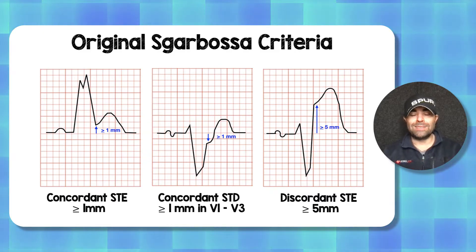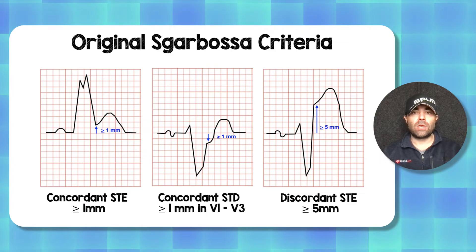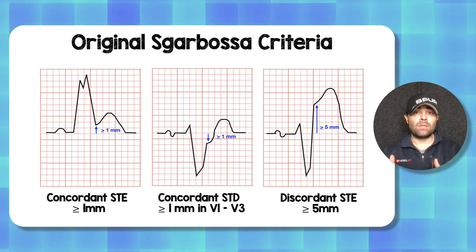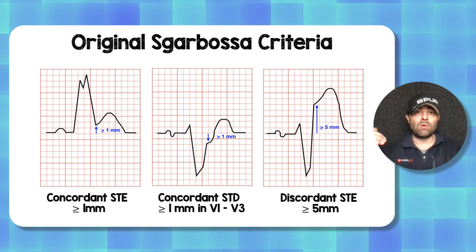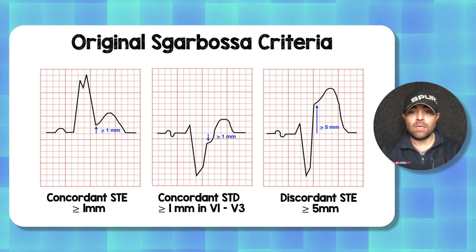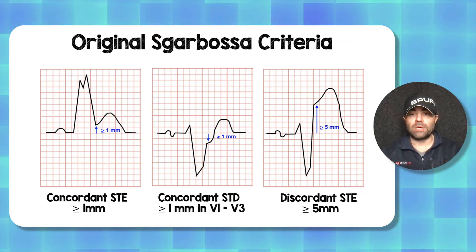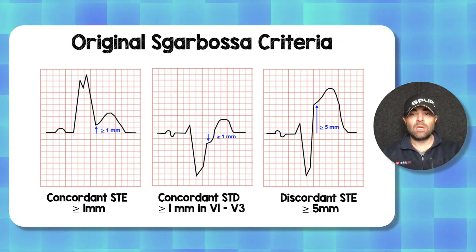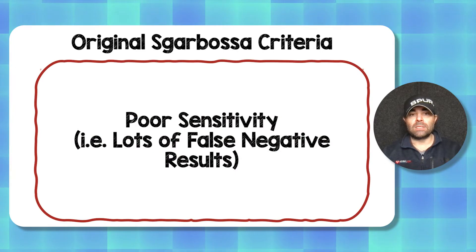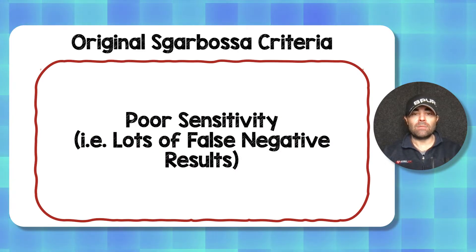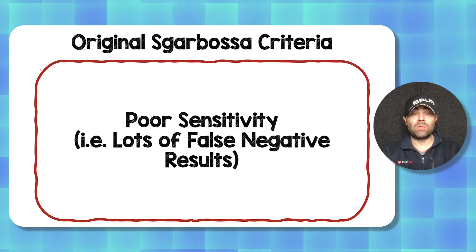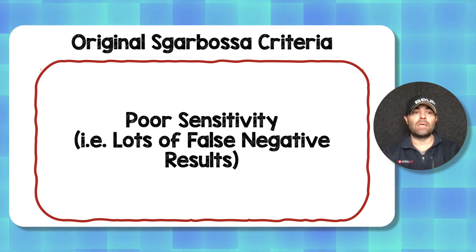The third component is discordant ST elevation — whatever direction your QRS is going, the ST segment is going in the opposite direction. The original Sgarbossa criteria said greater than or equal to five millimeters. The problem with this is that it has poor sensitivity, with lots of false negative results, and so it has actually been removed from the guidelines as a heart alert activation.